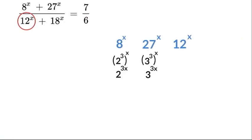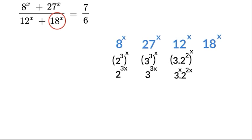Now moving to 12, we rewrite it as (2² × 3¹)^x, which gives us 2^(2x) × 3^x. Then for 18, we rewrite it as (2 × 3²)^x, and applying the power rule we get 2^x × 3^(2x).